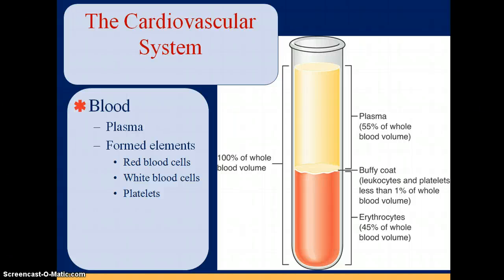Reviewing just a little bit about the blood vessels: we've got arteries that go to arterioles, which get smaller and connect to the capillaries where oxygen and nutrients are exchanged with the tissues or the alveoli. Then we get carbon dioxide and metabolic wastes exchanged as well.